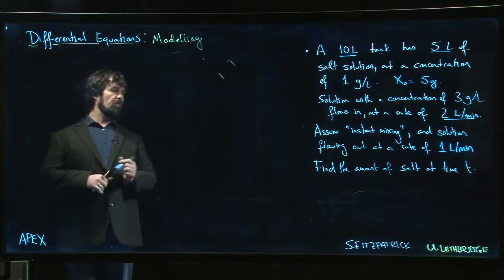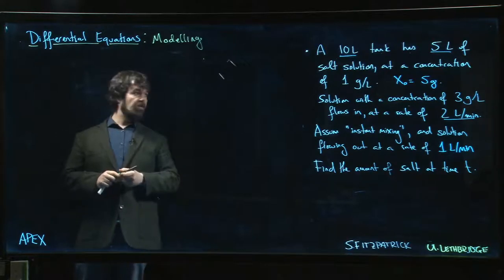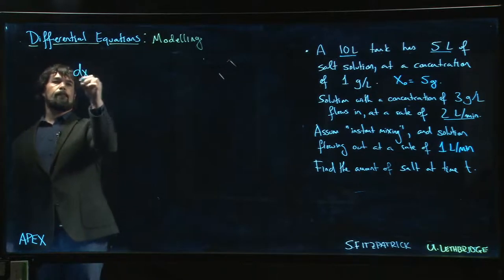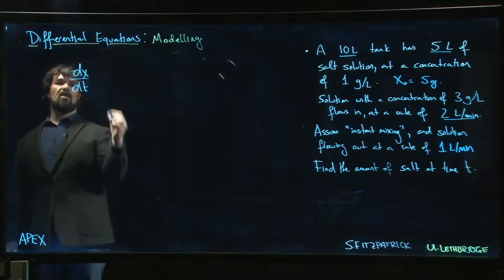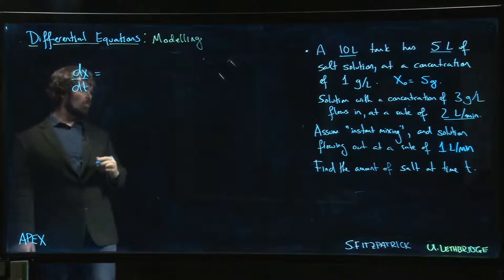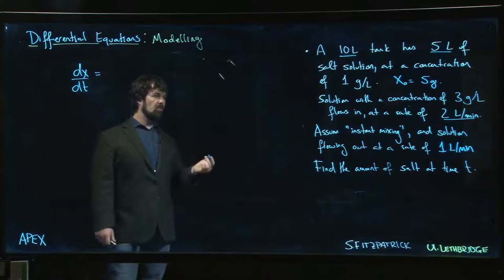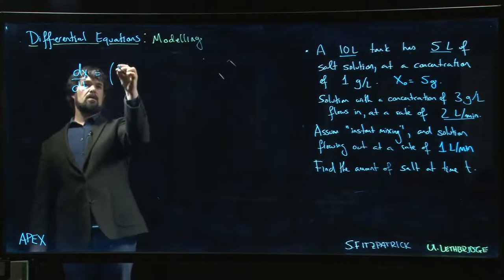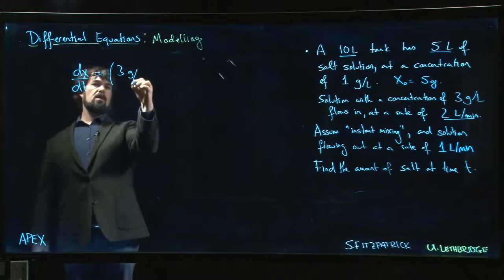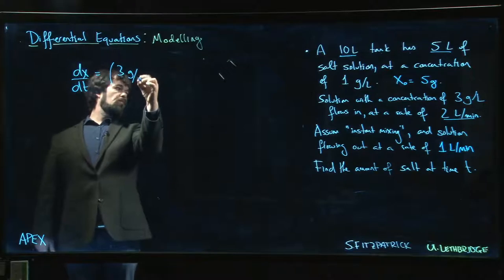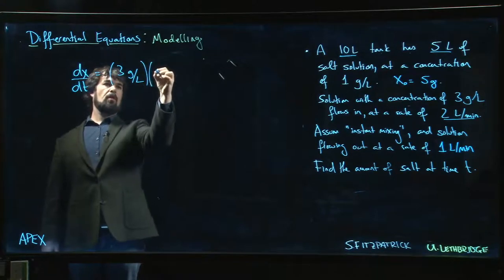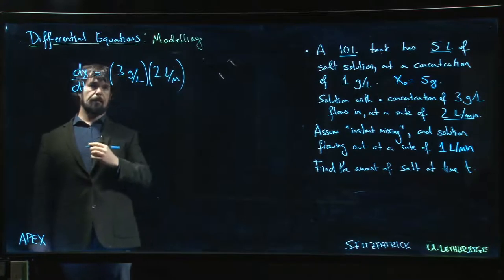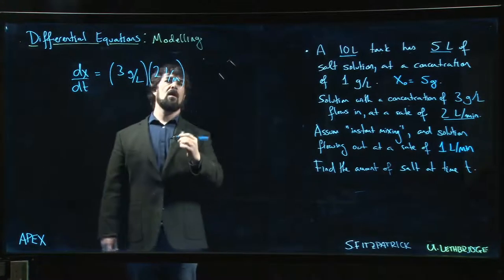We're going to work all this out. We still have that same initial concentration of 5, and we look for the rate of change in x. We still have solution flowing in at a rate of 3 grams per liter in the solution, which is coming in at a rate of 2 liters per minute.